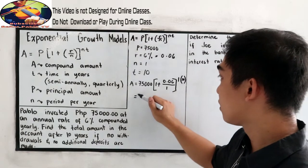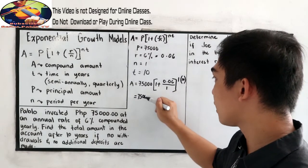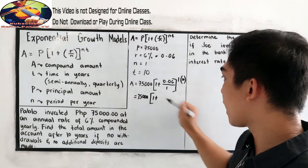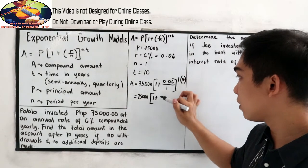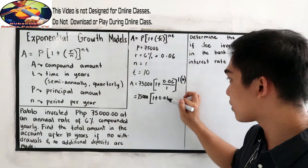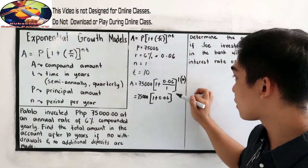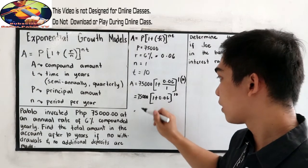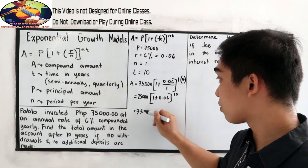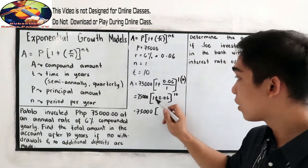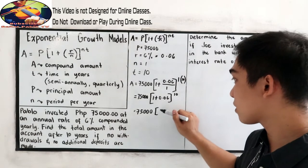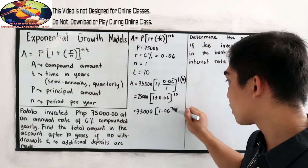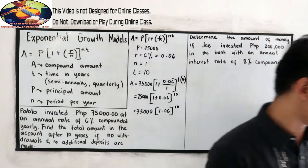Now, we have 75,000 times 1 plus 0.06 divided by 1, that is 0.06, raised to 1 times 10. This will become 10. So, 75,000 times 1 plus 0.06, this is 1.06 raised to 10. Let us use the calculator.